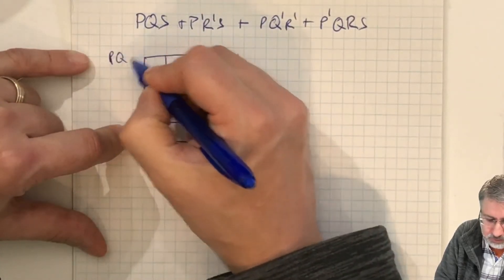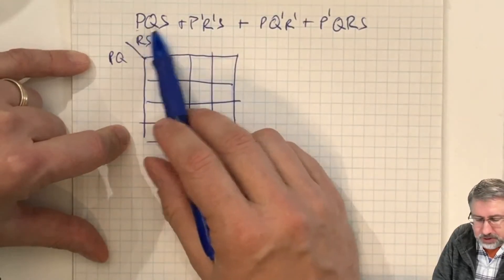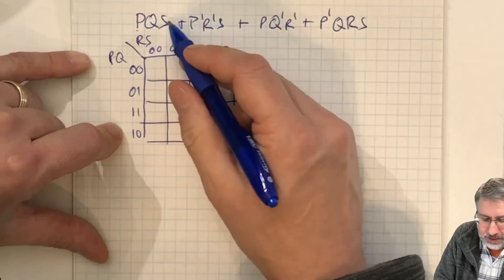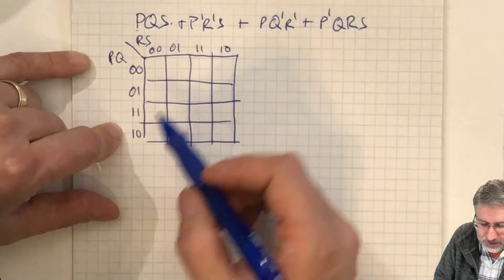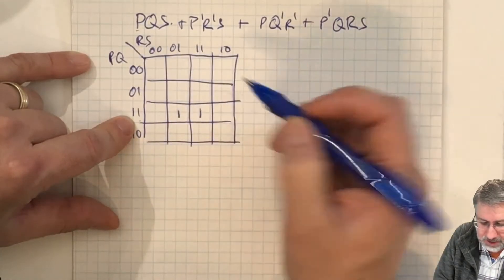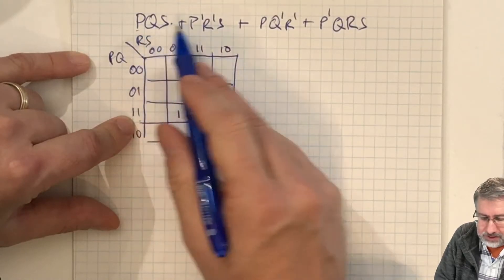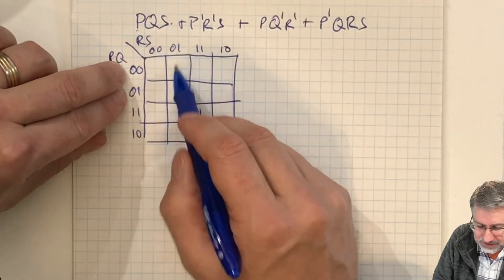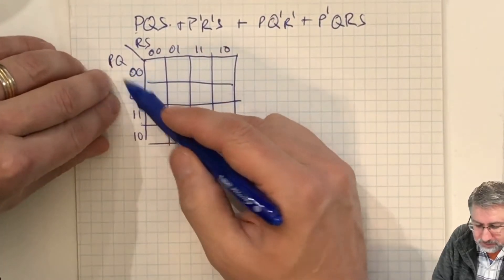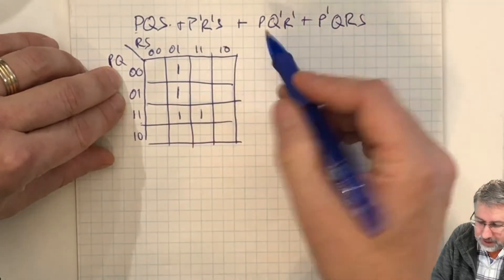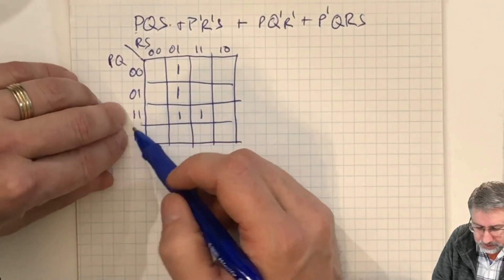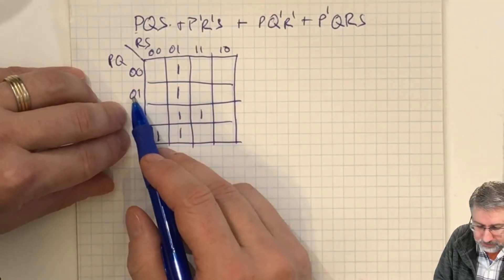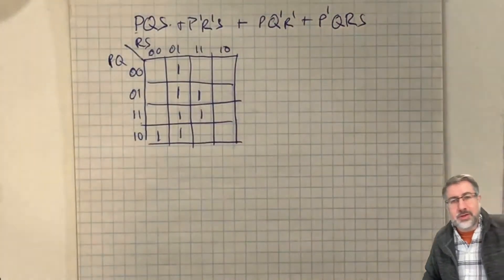The K-map is for P, Q, R, S. The term PQS is true when PQRS and PQR'S, so those two minterms give us the term PQS. For P'R'S: R' corresponds to two columns, and P' selects the inverted P rows, so P'R'S maps to those cells. Then PQ'R': P is here, Q' is there, R' is here. Each term is plotted into its corresponding cells in the K-map.